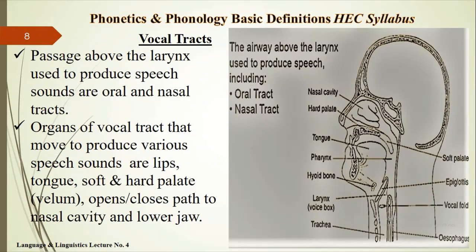Vocal tracts are the passage for the flow of air and the production of speech sounds. The nasal and oral cavity are called vocal tracts. The organs of the vocal tract that move to produce various speech sounds are lips, tongue, soft and hard palate, and nasal cavity.